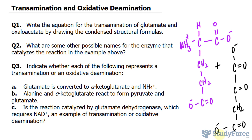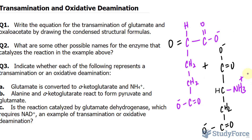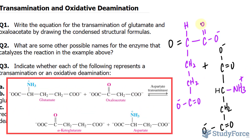The enzyme aspartate transaminase catalyzes the reaction between this oxygen and the amine group of this molecule, where the amine group and the double-bonded oxygen change place. This forms two brand new molecules: glutamate goes from being glutamate to alpha-ketoglutarate, whereas oxaloacetate goes from being oxaloacetate to the amino acid aspartate.